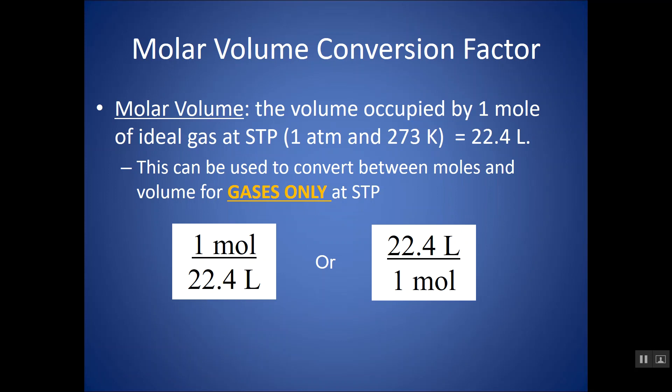And when you eventually get to the ideal gas chapter, where you will learn the ideal gas law, then you can also use PV=nRT to calculate this. This is a nice shortcut to go between moles and liters for a gas at STP. If you had a solid or liquid, you cannot use this. This is not true. One mole does not equal 22.4 liters.